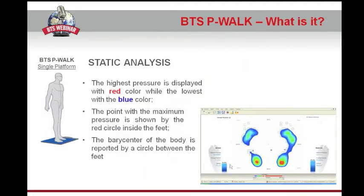In order to understand which areas have higher or lower values of pressure, a colored scale is used. As pressure values increase, the color changes from blue to red, passing through green and yellow to identify areas with pressure values in the middle between the highest and lowest ones. The point with the maximum pressure is shown by a red circle, and the circle between the feet represents the barycenter of the body.